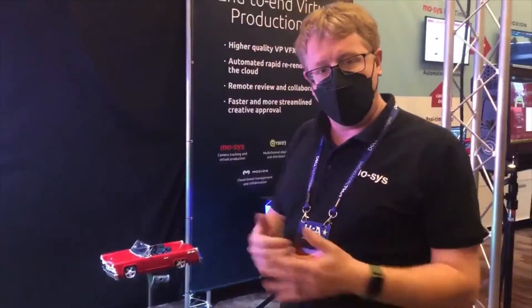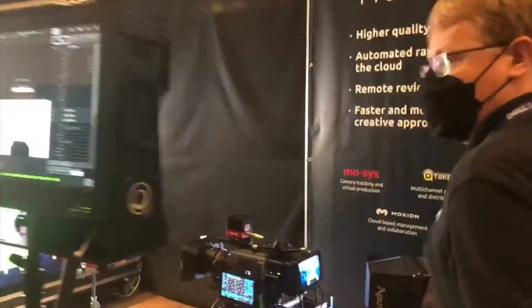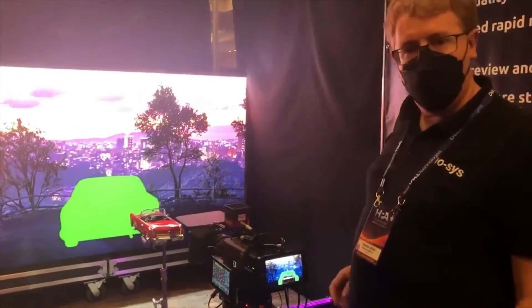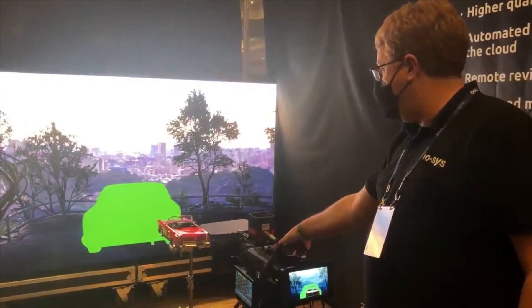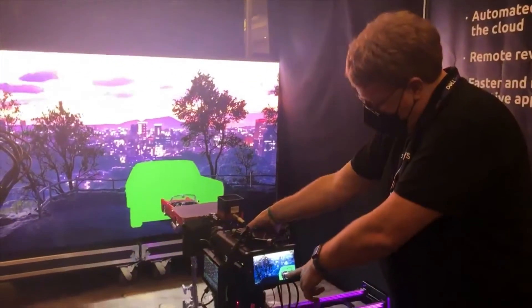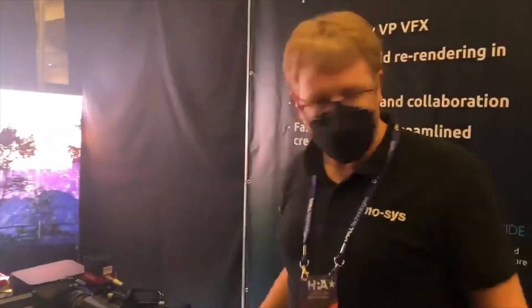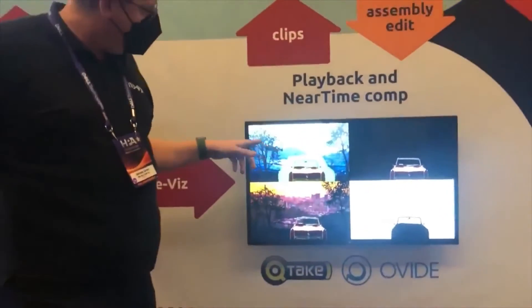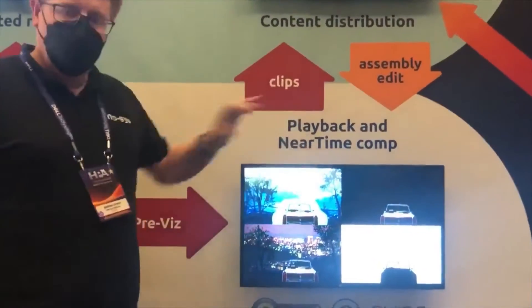We'll start at the camera end. We're demonstrating a new workflow for virtual production — we call it virtual production 3.0. We have a toy car, a Sony Venice on a slider, and a Sony LED wall behind. As I move the camera, the green screen moves behind the car so that we always capture green but only in the areas we need it. What we're able to do is capture the reflections of the trees and the sky in the boot of the car from the LED wall, but the rest of it we can replace later.